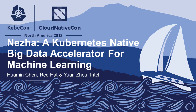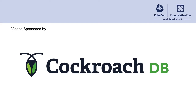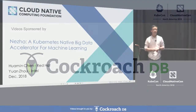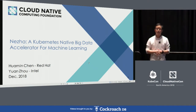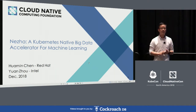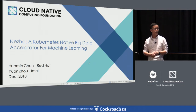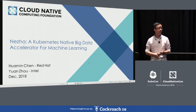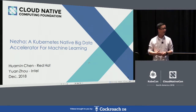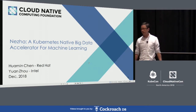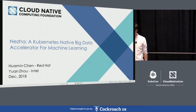Advancements in machine learning and how we can use Kubernetes native building blocks to build high-performance machine learning accelerations. For those of you I haven't had the chance to meet, my name is Huamin Chen, I work for Red Hat, and this is Yuan Zhou, he works for Intel. We come from different backgrounds and different companies, but the goal is the same: to use technologies to help people who are using Kubernetes to do machine learning.